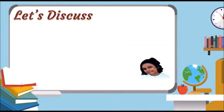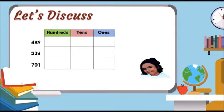Our three-digit numbers are 489, 236, 701. Let us show the digits in the place value chart.